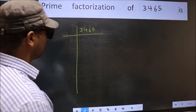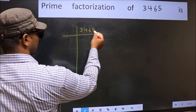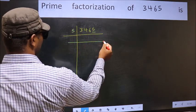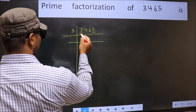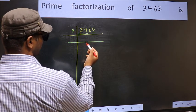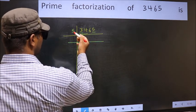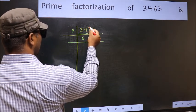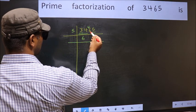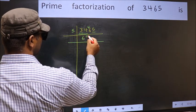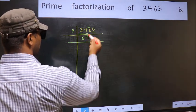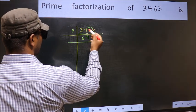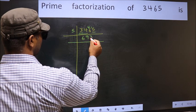Next, in this number, the last digit is 5, so take 5. First number 3 is smaller than 5, so take 2 numbers, 34. A number close to 34 in 5 table is 5×6=30. 34-30=4, 4 carried forward makes 46. A number close to 46 in 5 table is 5×9=45. 46-45=1, 1 carried forward makes 15. When do we get 15 in 5 table? 5×3=15.